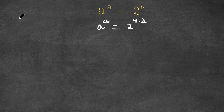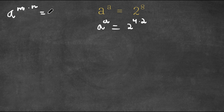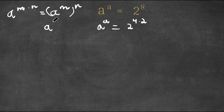And now if we have something in the form a to the power of m times n, we can write this as a to the power of m to the power of n. Or we could also write this as a to the power of n to the power of m. It doesn't matter the order because they're both being multiplied and multiplication order doesn't matter.